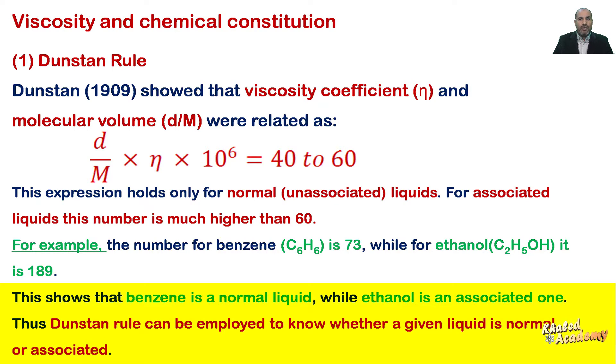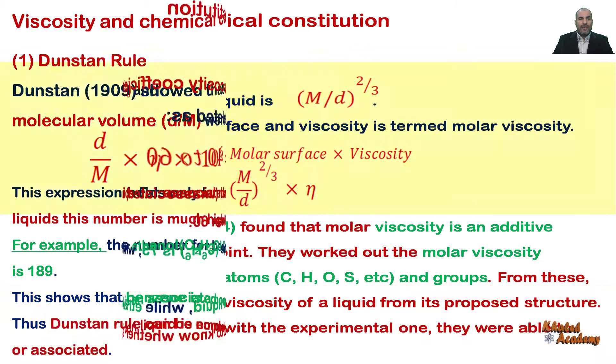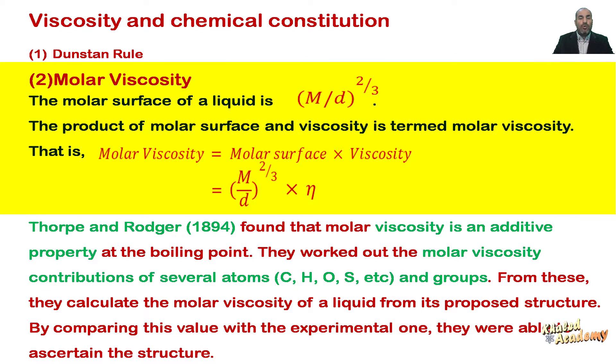This shows that benzene is a normal liquid while ethanol is an associated one. Thus Dunstan rule can be employed to know whether a given liquid is normal or associated. The second rule is molar viscosity.